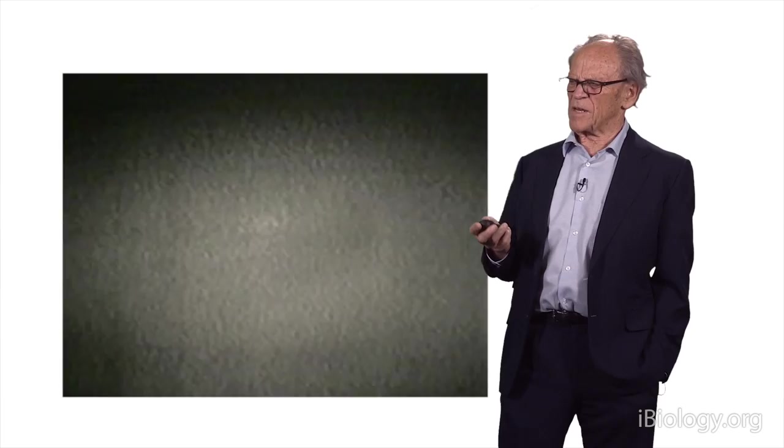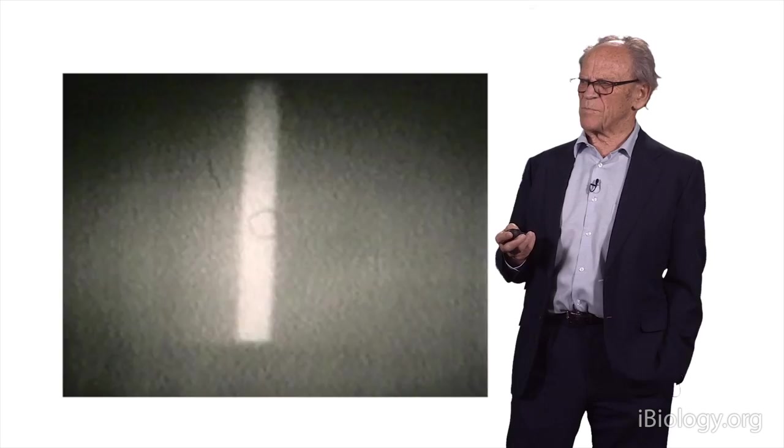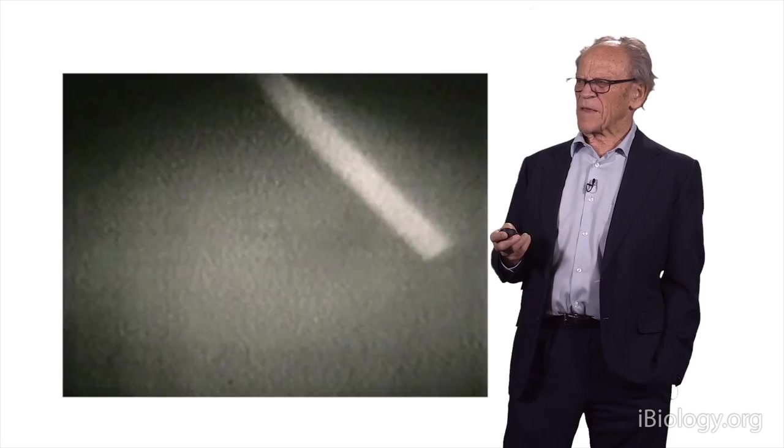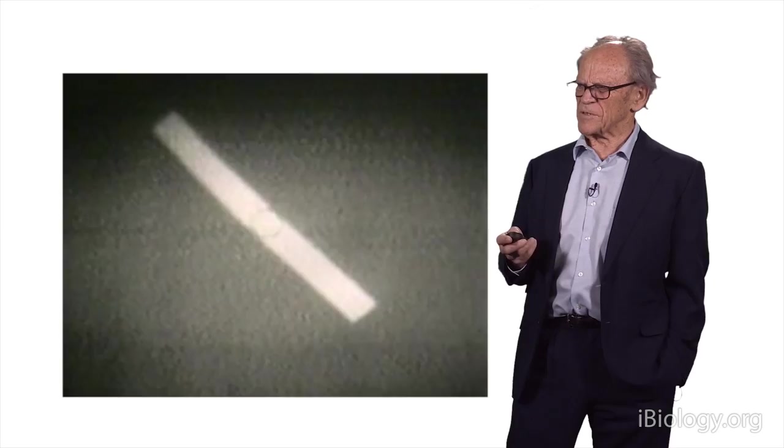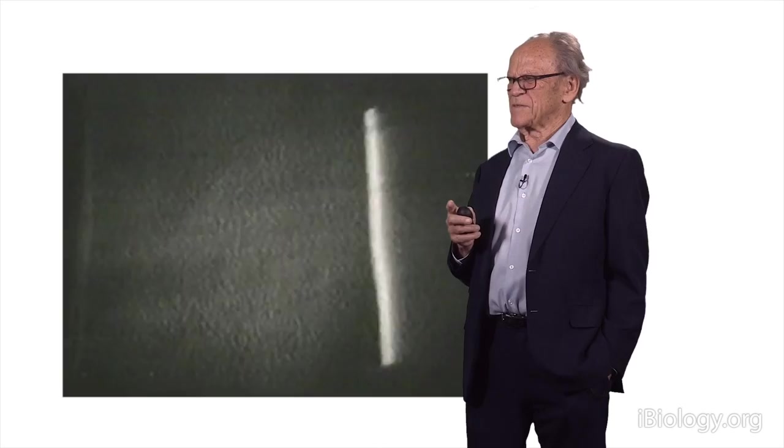This is showing the center-surround arrangement that Kufler was the first to show in retinal ganglion cells, but this is the geniculate cell. Now we show that this is a circular symmetric organization of the receptive field. To show that, we have this bar moved across the receptive field in different orientations. You can hear that there's no real difference in the frequency of impulses. We're still only recording from a single nerve cell in the relay nucleus.